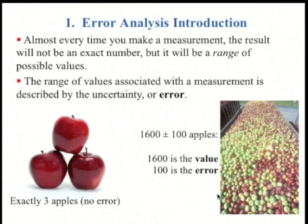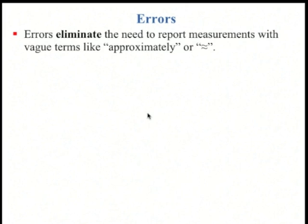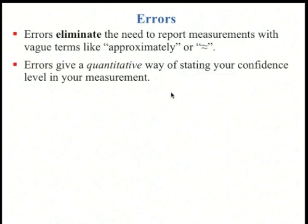Some people also call this the uncertainty. Errors eliminate the need to report measurements with vague terms like about or approximately. Errors give a quantitative way of stating your confidence level in your measurement.